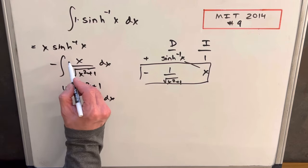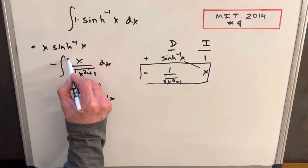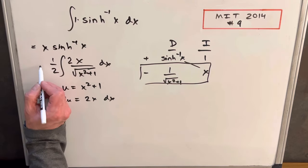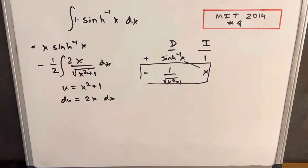Pretty close to what we have here. Let's just multiply a two here, but then we need to divide by two, or multiply by a half. Now doing that, we can make our substitutions.